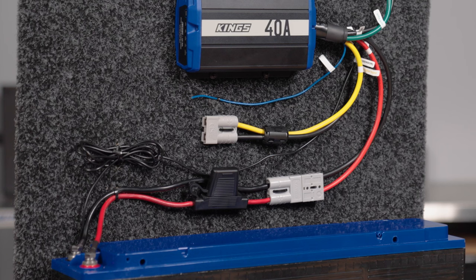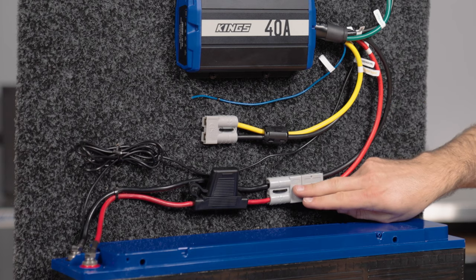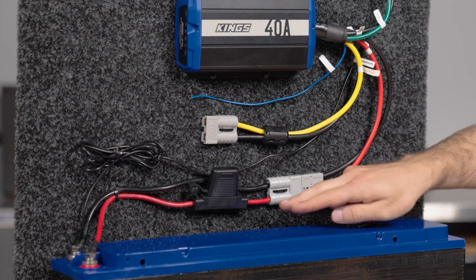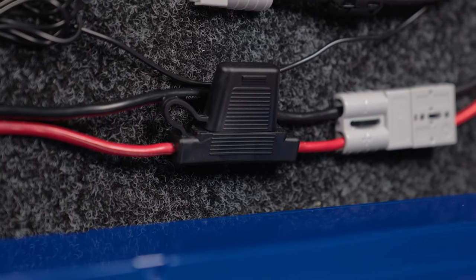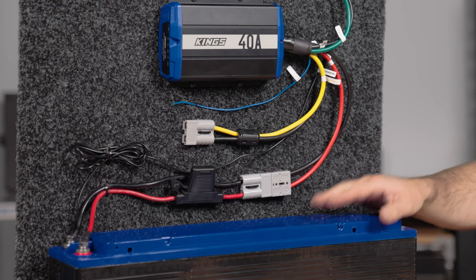For this example, we've connected the red and black pair to another quick-connect plug that's part of a 50-amp wiring kit, pre-fused, and then connected to our auxiliary or second battery.